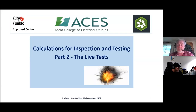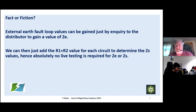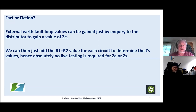This is supposed to be 45 minutes — the live tests: calculations for inspection and testing. It's discussing the live testing, some of the calculations, and some of the issues about the live tests that we do. We start off with a discussion on earth loop impedance testing, and there's always a discussion as to whether or not we do earth loop impedance testing. In various places you go to, they say 'no, this is dangerous, we're not supposed to do live tests, we can do this by calculation, there is no need to carry out this test.'